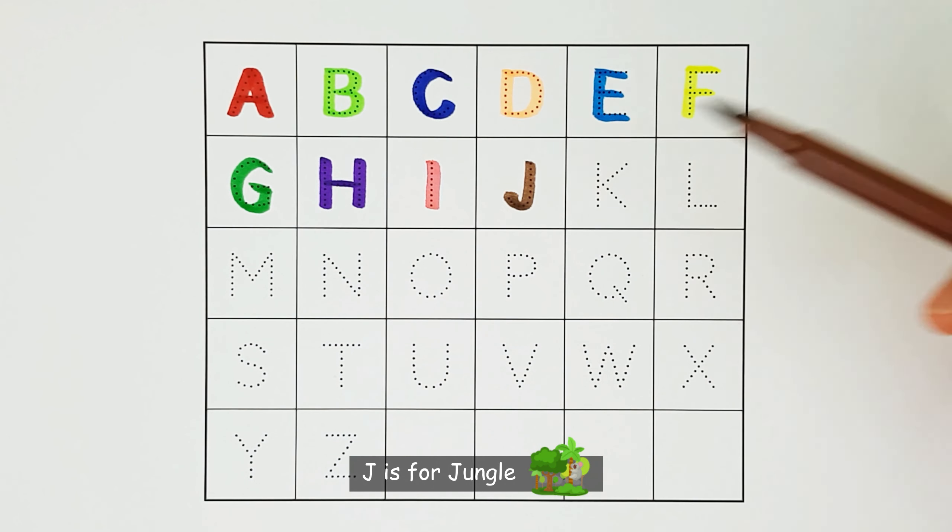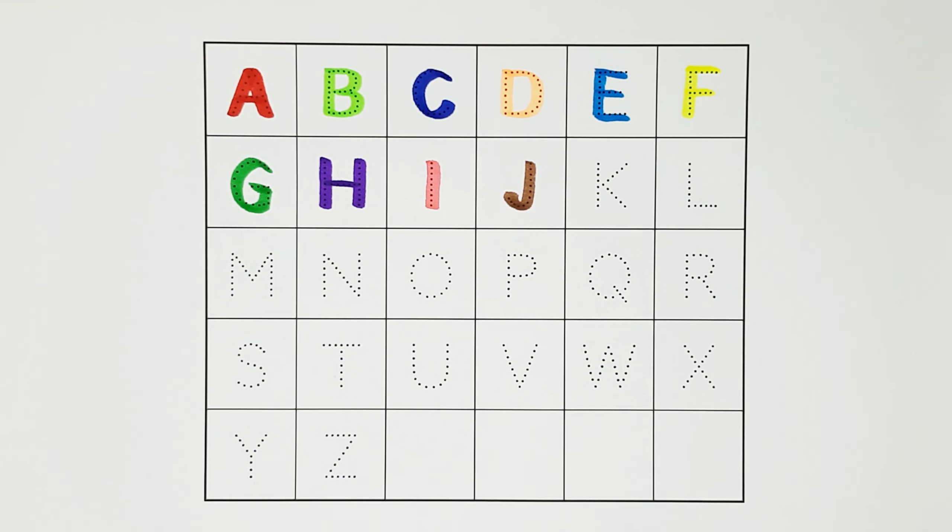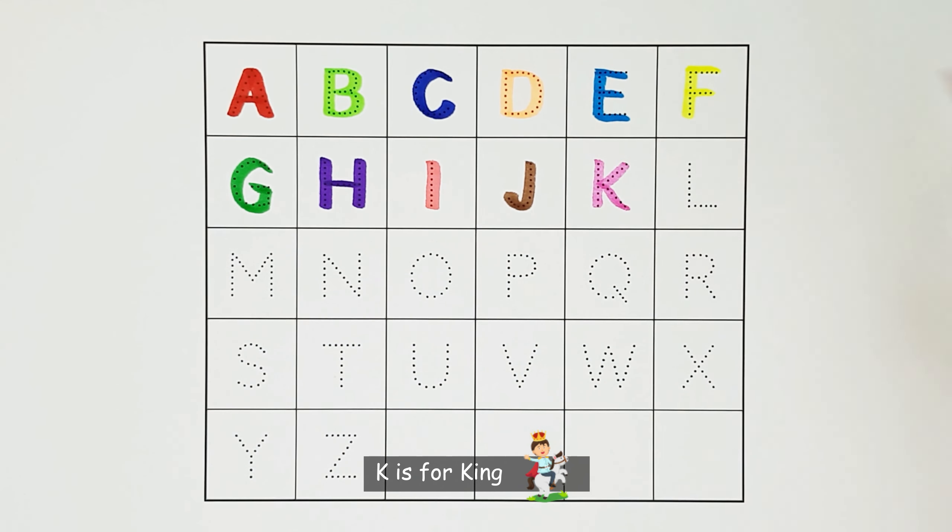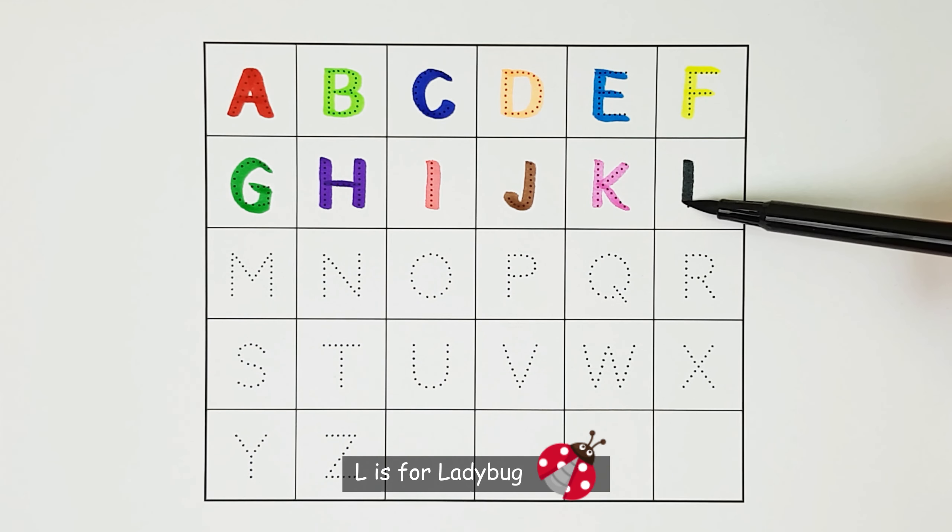J. J is for jungle. J. K. K is for king. K. L. L is for ladybug. L.